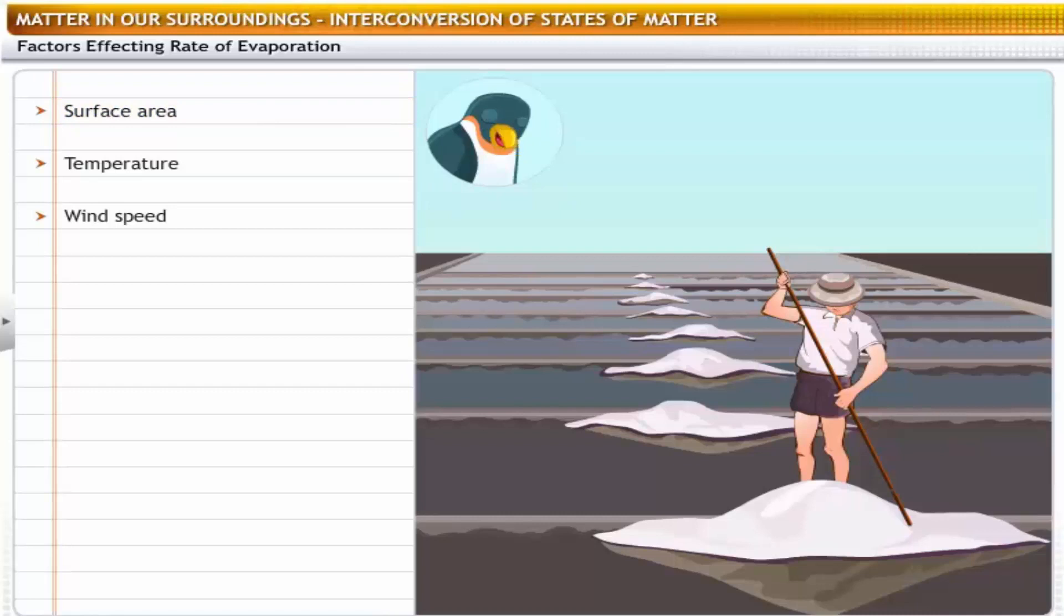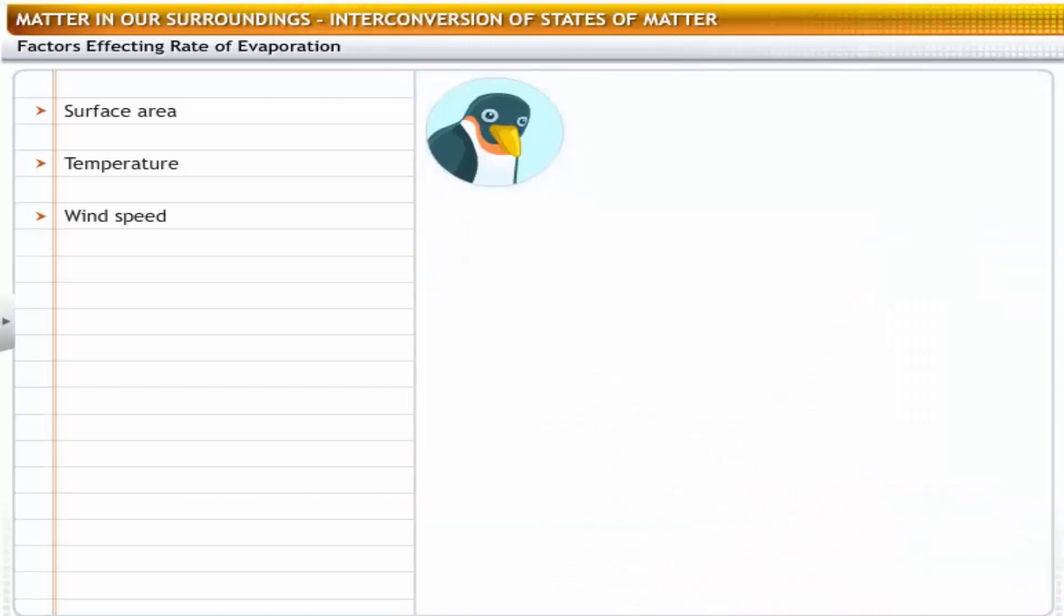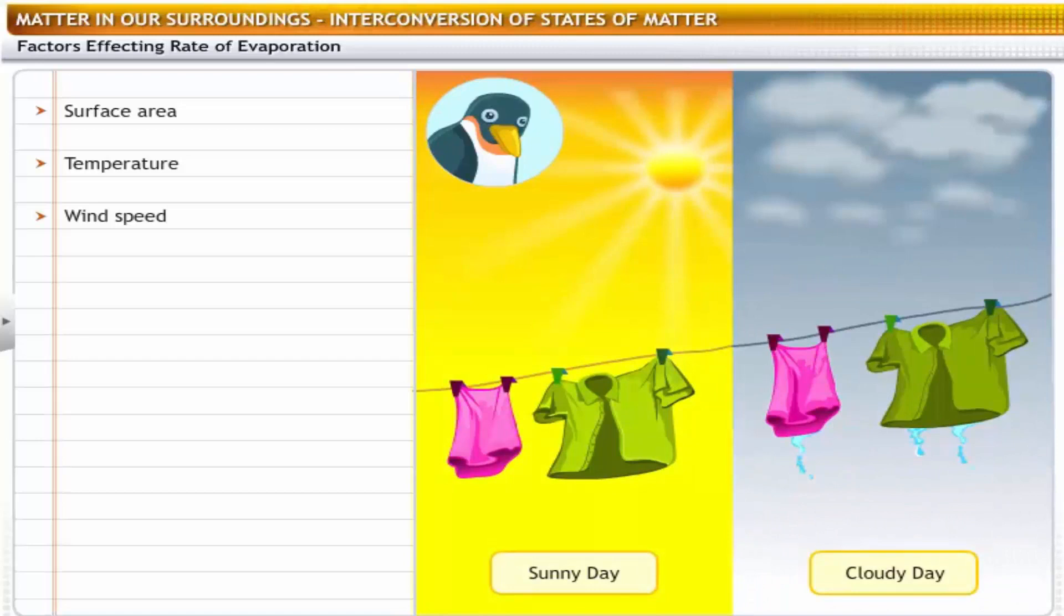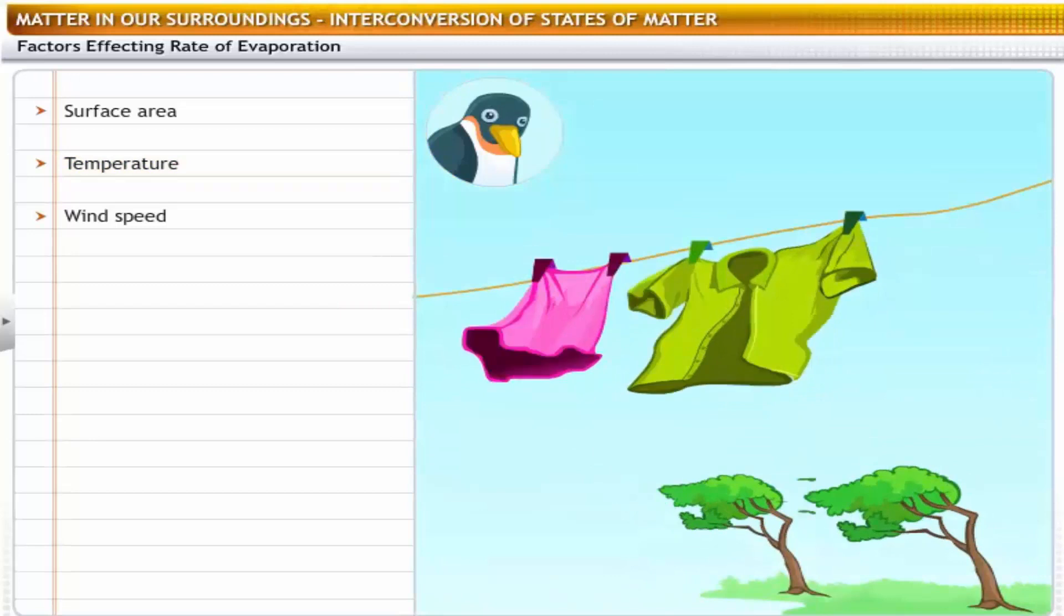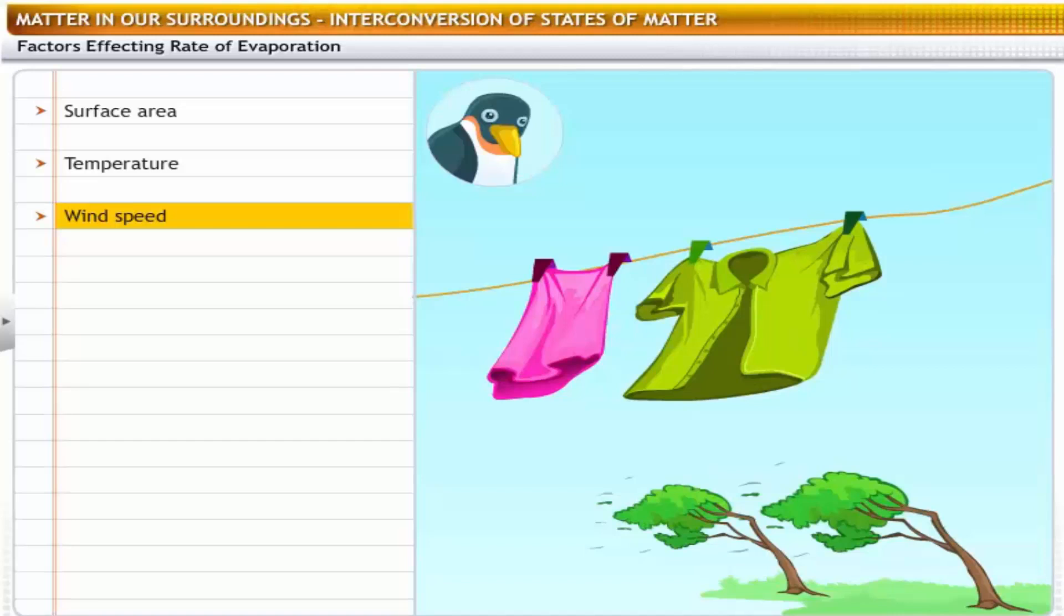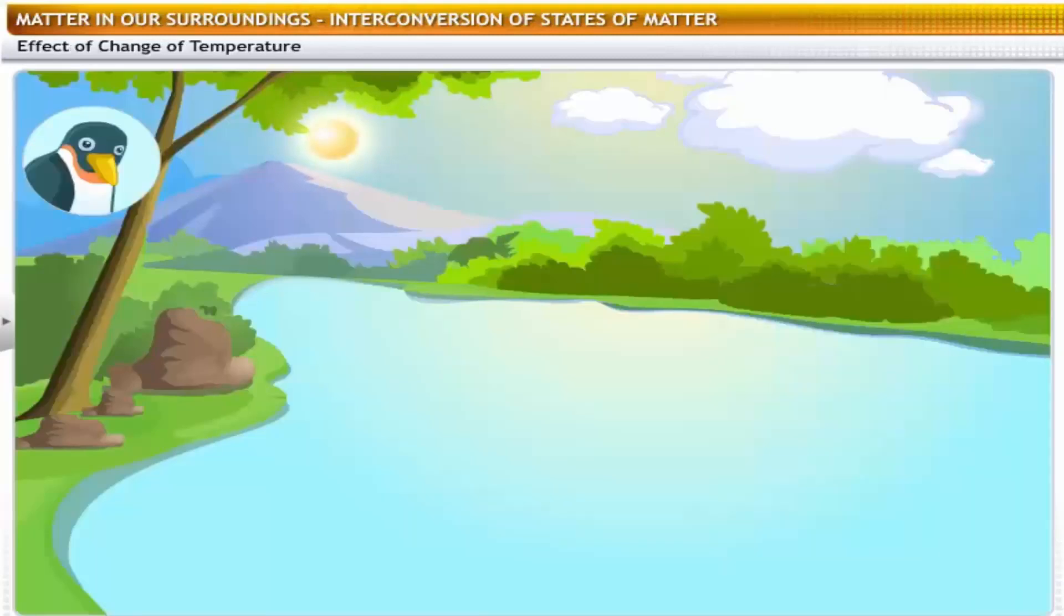So, the rate of evaporation depends on the surface area. What else does the rate of evaporation depend on? Well, evaporation also depends on the temperature of the surroundings. You know that the clothes dry faster on a sunny day than on a cloudy day. Thus, evaporation is faster at higher temperatures. You're probably thinking that clothes also dry quicker on a windy day. You're right. This is because of the speed of wind. The particles of water move quickly reducing the amount of water vapor in the surroundings.